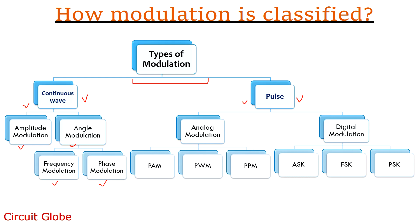Pulse modulation is mainly classified into two categories. First is analog modulation, while the second is digital modulation. Analog modulation is further classified as PAM (pulse amplitude modulation), PWM (pulse width modulation), and PPM (pulse position modulation). Digital modulation is classified as ASK (amplitude shift keying), FSK (frequency shift keying), and PSK (phase shift keying).